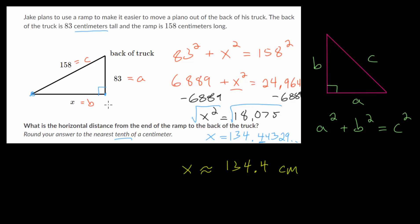And one way to just double check that you're at least somewhat on the right track is, since this is a leg of the triangle, it has to be less than the hypotenuse. And this is less than 158, so that will at least point us that we're in the right direction.